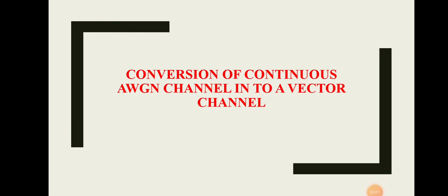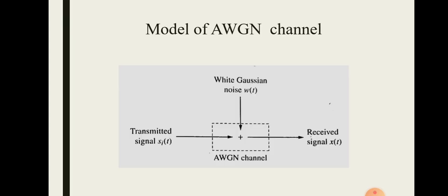Dear students, today we are going to discuss the conversion of a continuous AWGN channel into a vector channel. You have studied about the AWGN channel in the previous videos of this digital communication course. This figure shows the AWGN channel — when a signal is transmitted through a channel, it is affected by noise, represented as white Gaussian noise, which has a Gaussian distribution.